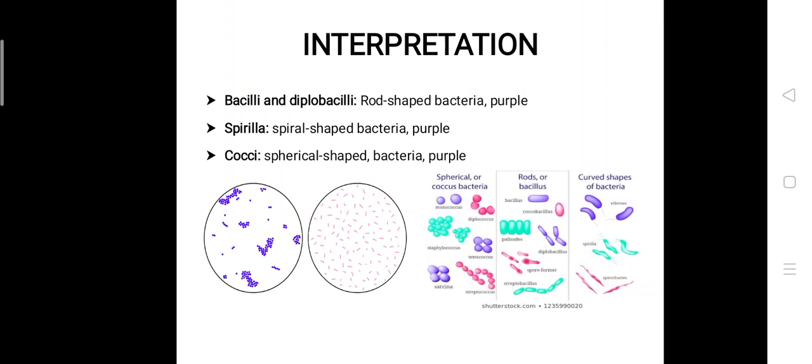For cocci, the bacteria will be spherical in shape and purple in color. Cocci can be arranged in various ways: a single coccus is called monococcus, two cocci is a diplococcus, a grape-like cluster is staphylococcus, an arrangement of four is tetracoccus, an arrangement of eight is sarcina, and when arranged in a chain form it is known as streptococcus.